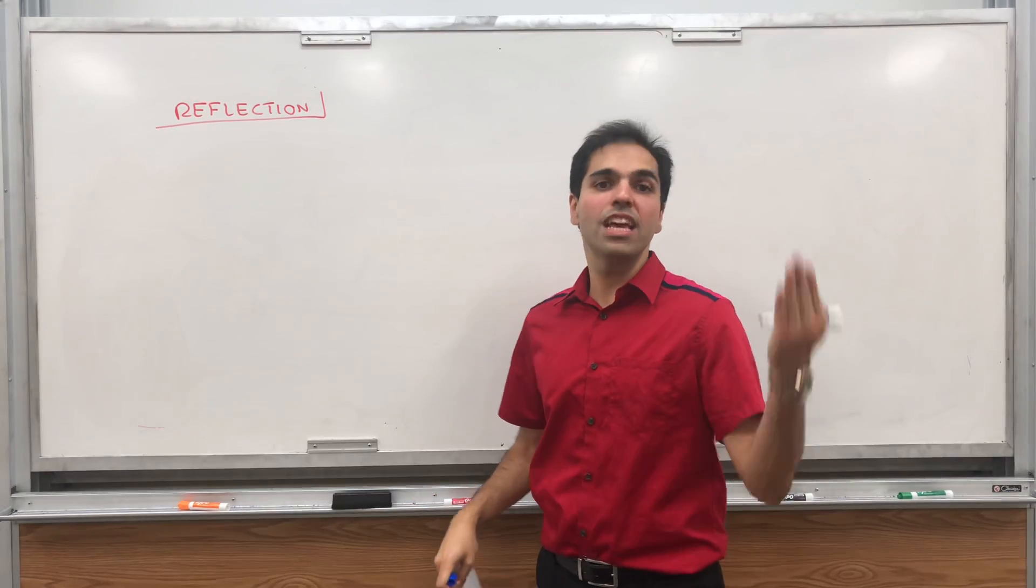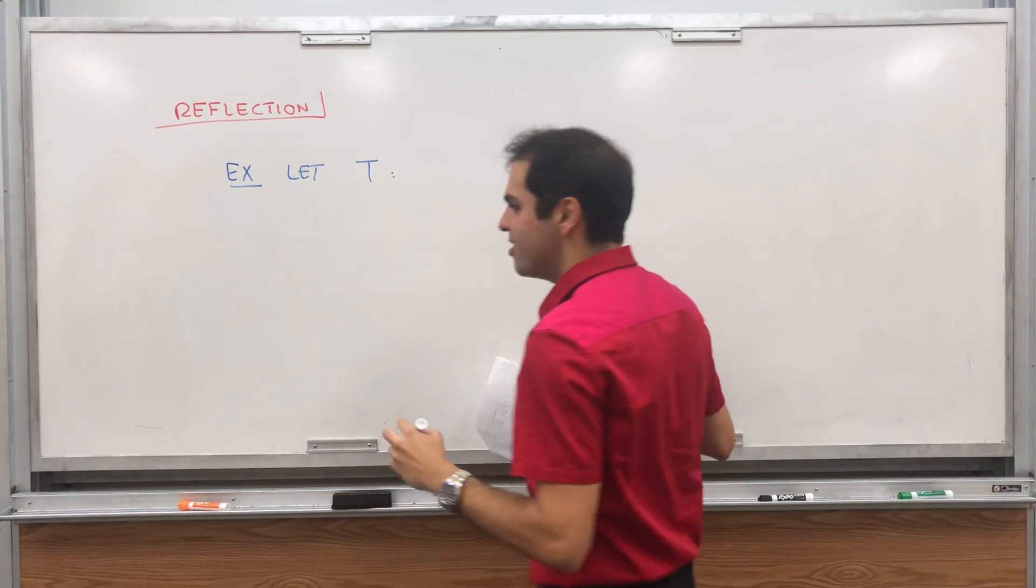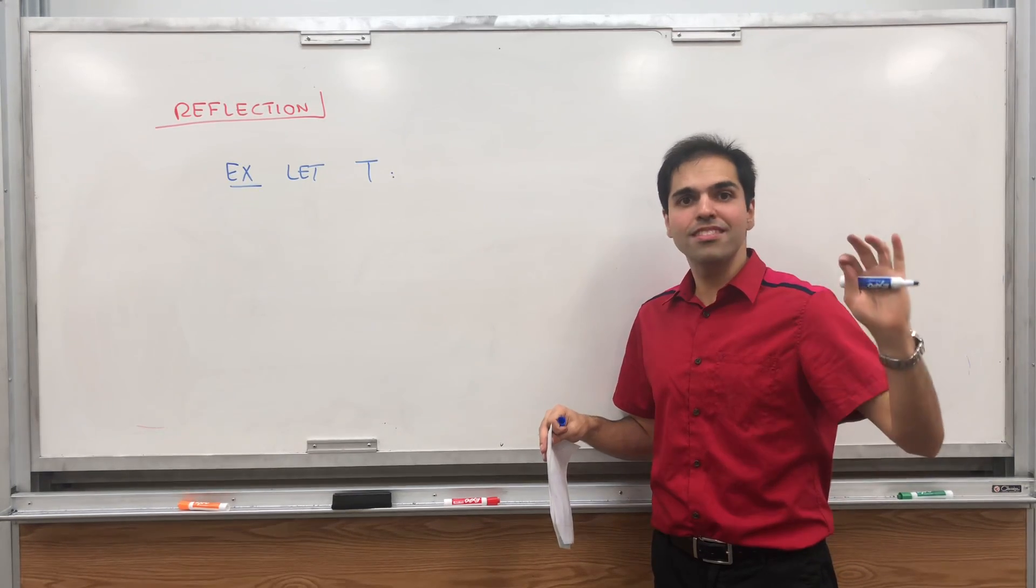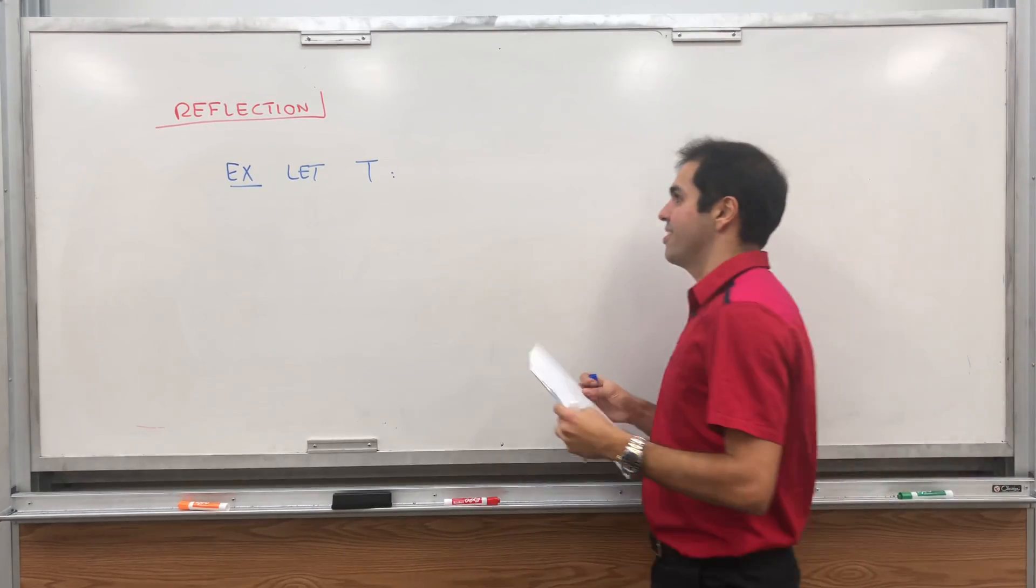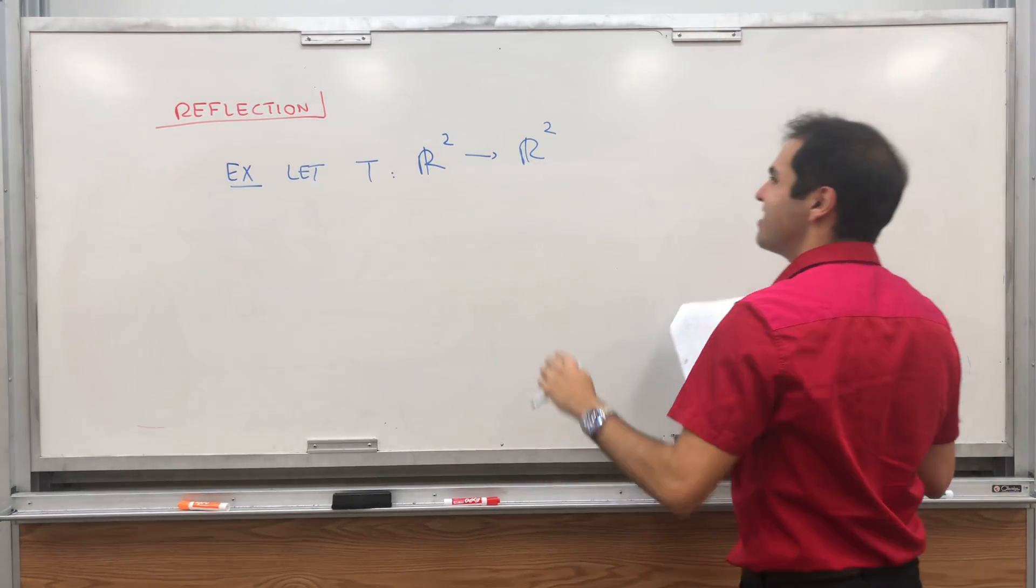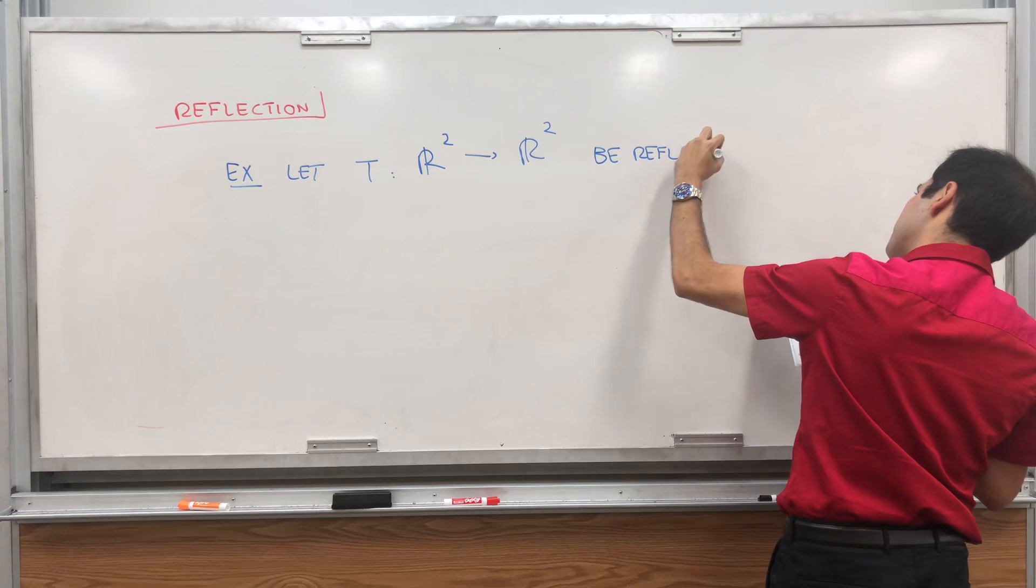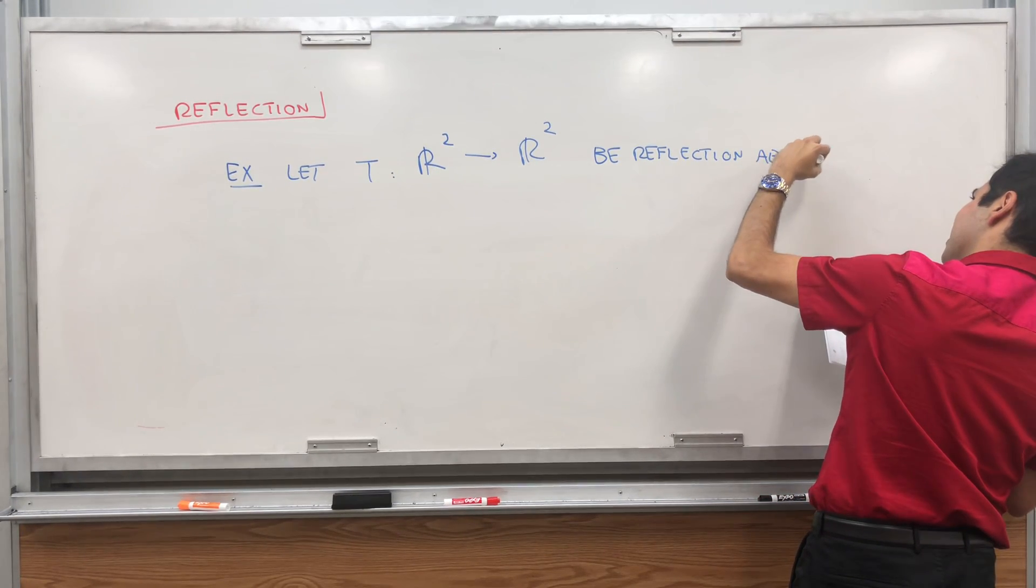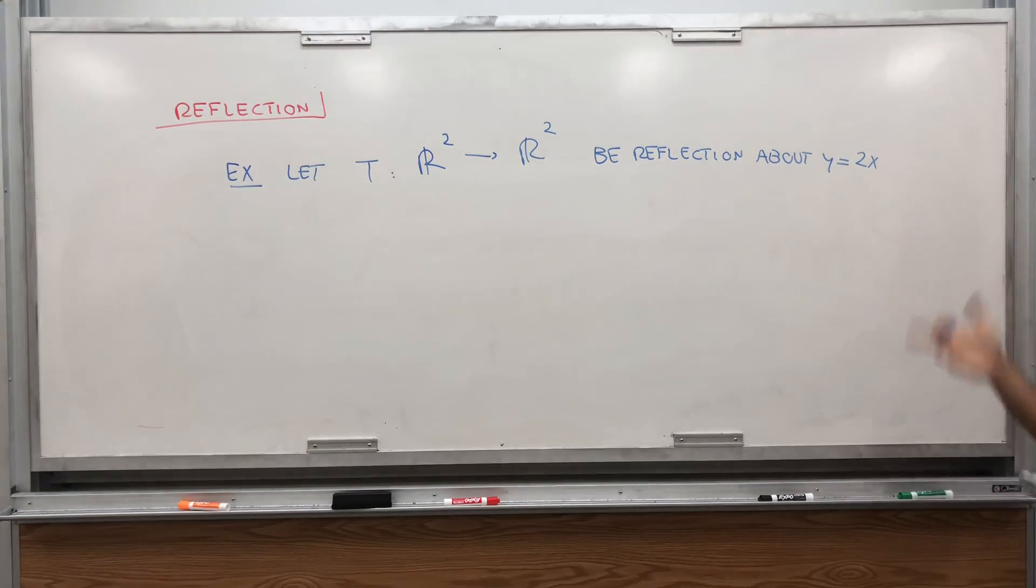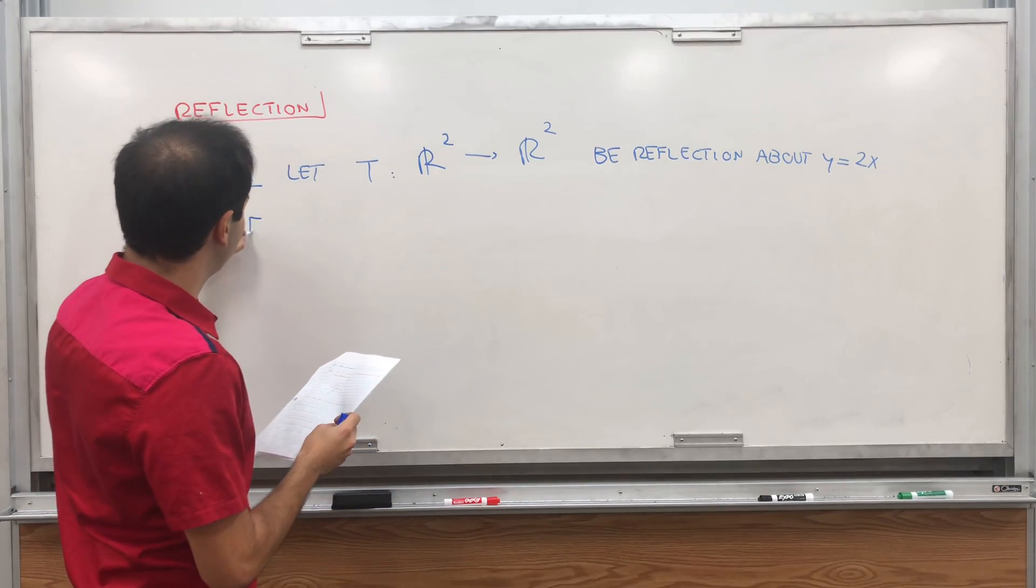But now we want to do something much harder. Let's find a reflection about y equals 2x. And you could try this out. If you find a formula without linear algebra, I'd be pretty impressed because the formula is not obvious to guess. But in the end, you'll see what it is. So let T go from R² to R², be reflection about y equals 2x. And at the end, I'll tell you how to do it with y equals 3x or mx in general.